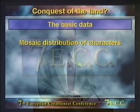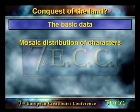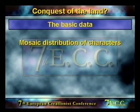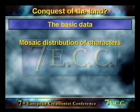Now we've looked at the data, let's think about the important issues and challenges these fossils raise for both creationist and Darwinian models. There are two points to draw out from all of this. The first is that in the fossil record we see a mosaic distribution of characters.